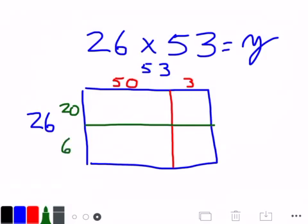Now in this box up here, I'm going to multiply 20 times 50. Basic fact is 2 times 5 is 10. Add my two 0's. So 20 times 50 is 1000. Over here in this box, I'm going to do 20 times 3. 2 times 3 is 6. Add 1 0.